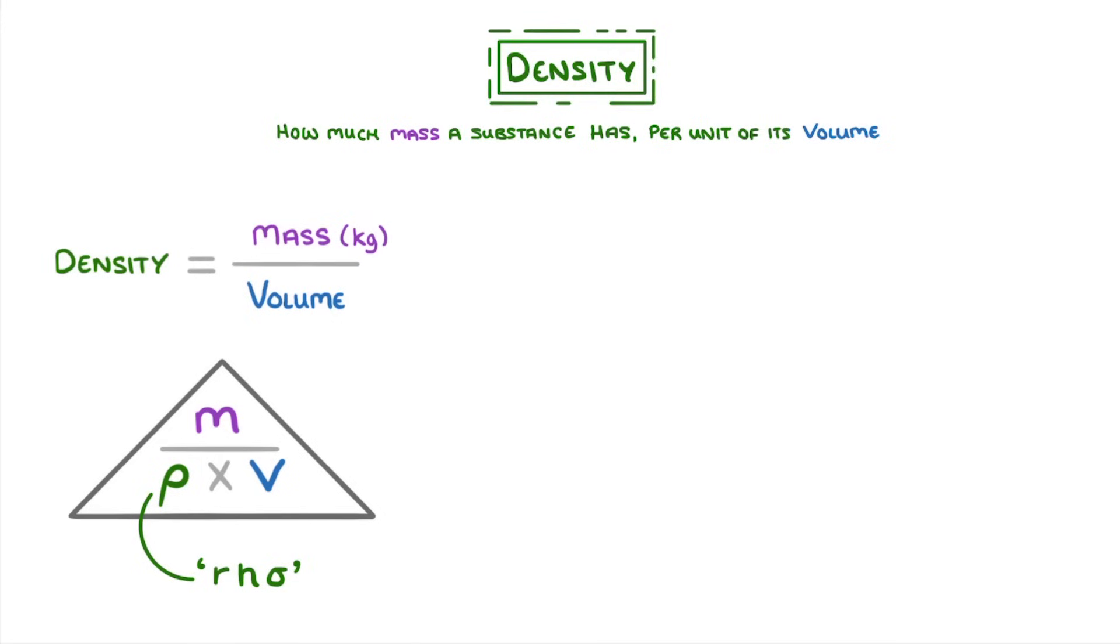And because mass is measured in kilos, and volume is measured in meters cubed in physics, density is normally measured in kilos per meter cubed.